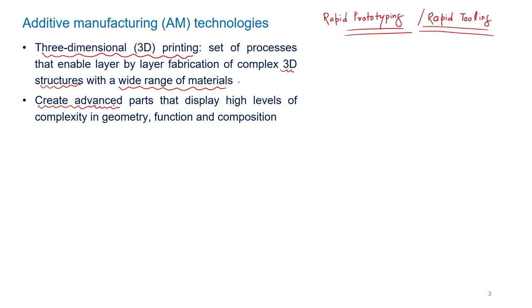The entire objective of additive manufacturing is to develop complex shapes, and these techniques are successfully providing geometrically complex shapes. They provide many functional capabilities, and multi-material deposition is also possible — depositing two different materials at two different layers. The key requirement is that these layers properly fuse together.